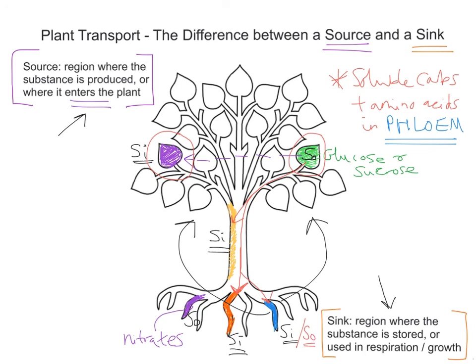So there's the key difference between a sink and a source. The source is the region where a substance is produced or where it enters the plant. The sink is simply the region where that substance gets stored or is used for respiration or for growth. In this video we looked at the difference between the two in terms of plant transport. There are other videos on the vascular bundle, root hairs, water transport, and some A-level videos on translocation and exactly how these sugars are moved in what's called the mass flow theory or mass flow hypothesis. Hope all that helps — thank you.